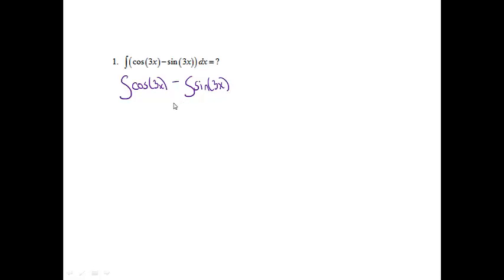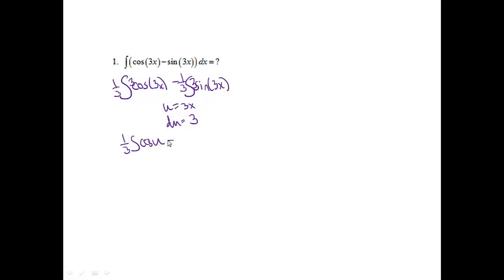Since I have the cosine of something and the sine of something in parentheses, for both of these I'm going to let u equal 3x, and then the derivative of 3x is 3. So I notice on each of them I'm missing a 3 on the inside, so I'll have to put a 1/3 on the outside. Then I'll end up getting 1/3 integral of cosine u minus 1/3 integral of sine u.